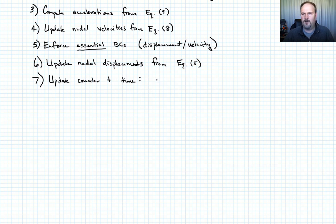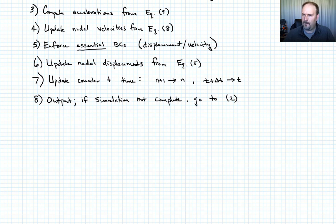And then we go back and we go ahead and update our counter and time. So that means that our n plus one now just goes to n. And our t plus delta t just goes to t. And then finally, we compute any outputs that we want. And if we need to run again, we go back to step two. So this just iterates through time, stepping through time in increments of delta t.